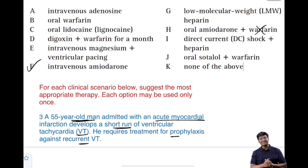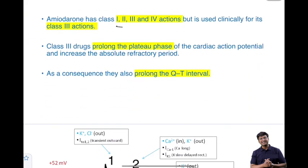The correct answer is intravenous amiodarone — not oral amiodarone plus warfarin. Along with amiodarone, in patients with acute MI you will be giving anticoagulation in the form of heparin, or the patient may have been thrombolyzed. For prophylaxis, what we give is intravenous amiodarone.